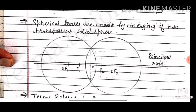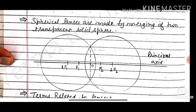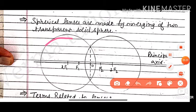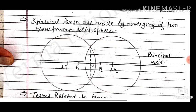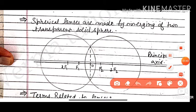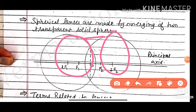Now, how do we obtain spherical lenses? Spherical lenses are made by merging two transparent solid spheres — not hollow spheres, but two solid spheres merged together. For a convex lens we merge them one way; for a concave lens we fill the medium differently to get the concave shape.